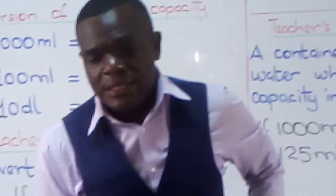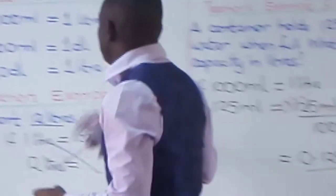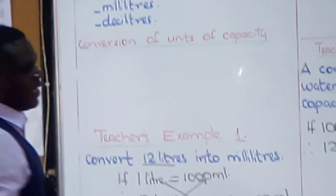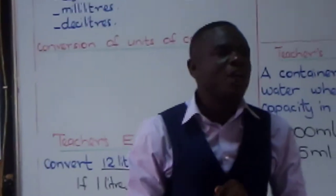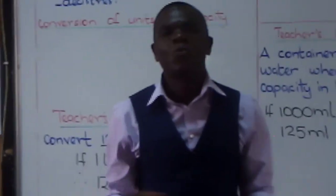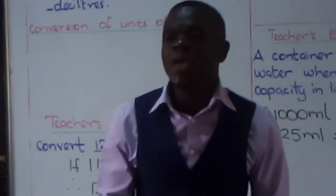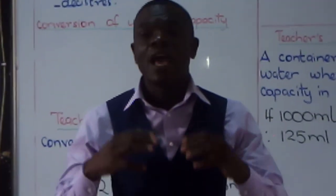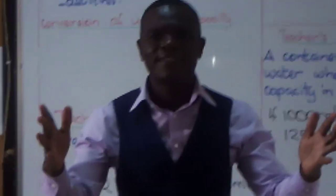Boys and girls, I was glad teaching you. Do you have any questions? Let me wrap up very quickly. How many milliliters make one liter? Jasmine — very good, 1000 milliliters! How many deciliters make one liter? Baldwin — 10 deciliters make one liter. Beautiful! God bless you boys and girls. I was very happy teaching you. Have a nice time!